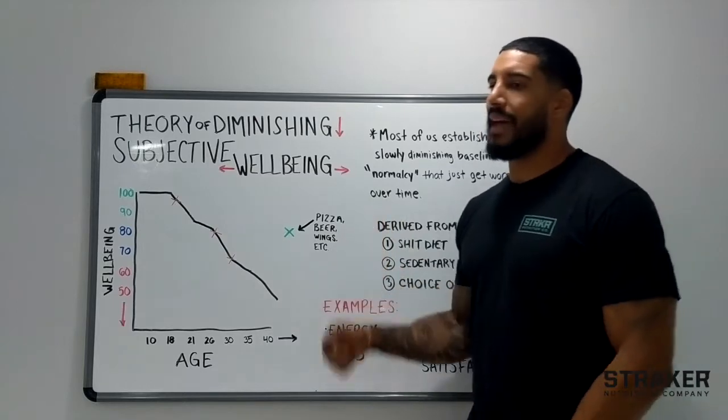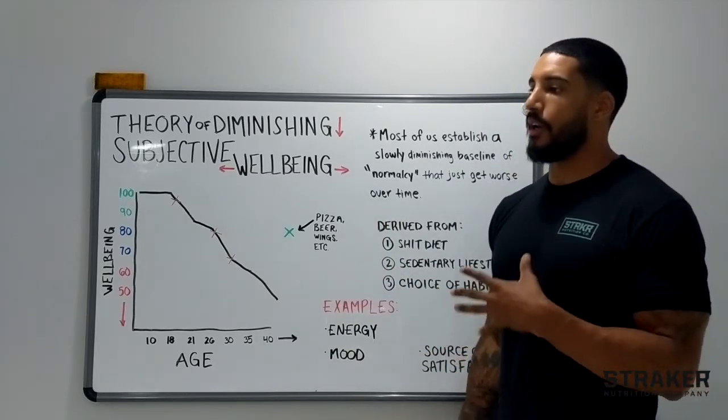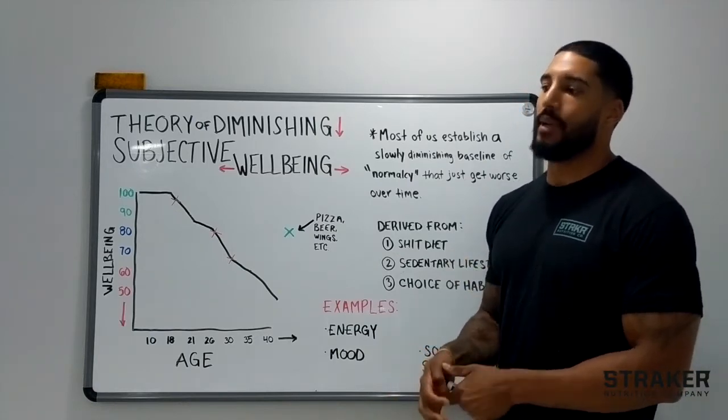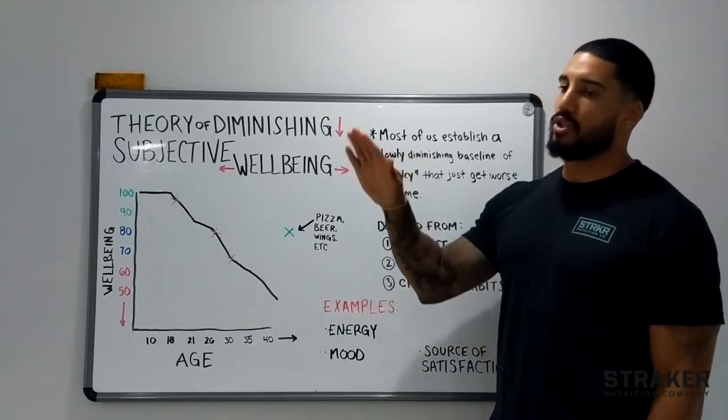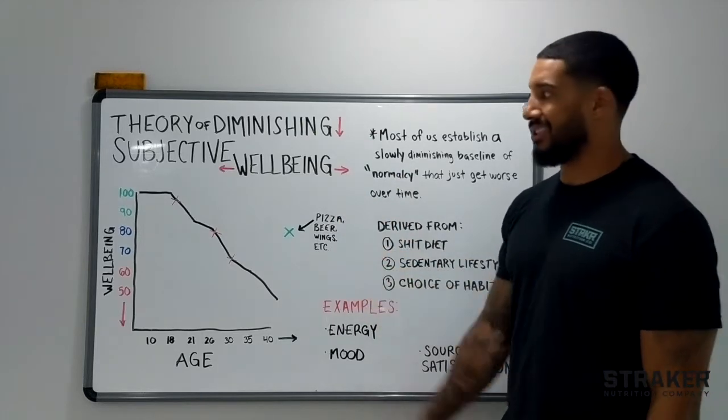So what I mean by that is we tell ourselves that we feel normal with our current routine, habits, and eating patterns. But what's really happening is those three things are slowly declining over time even though our perception of where we are remains the same.